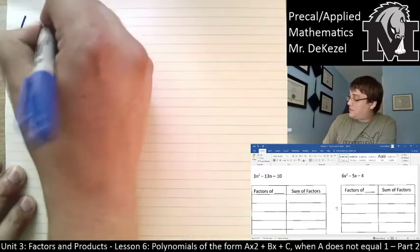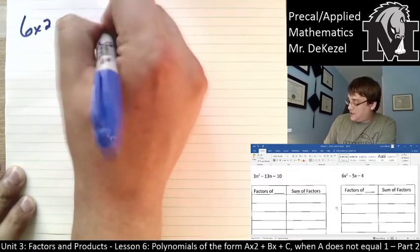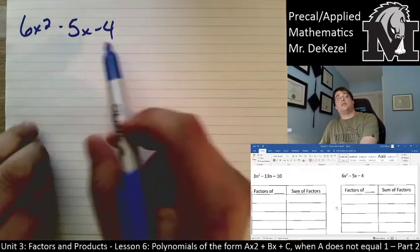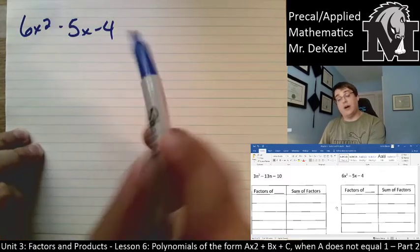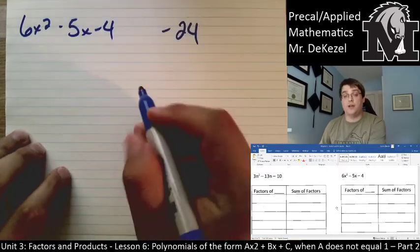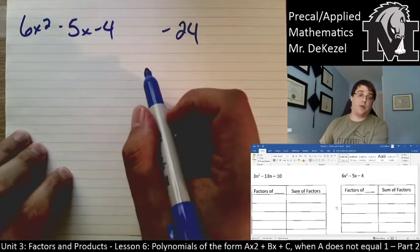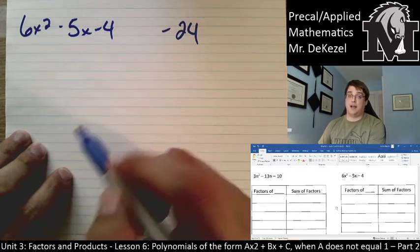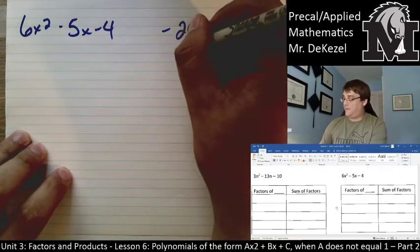We have 6x squared minus 5x minus 4. So, to decompose the middle, we're going to multiply the two outside terms. So, we have minus 24. So, we want multiples of minus 24 that add to minus 5.